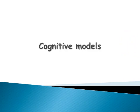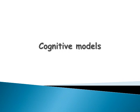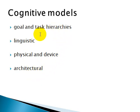These cognitive models are categorized or listed as different models or classifications. They are as follows: goal and task hierarchies, linguistic, physical and device model, or architectural model. Today in this session we will be learning about goal and task hierarchies.